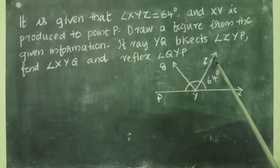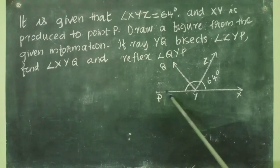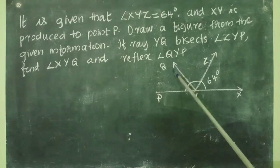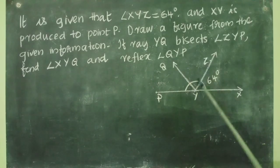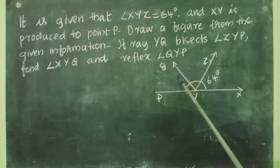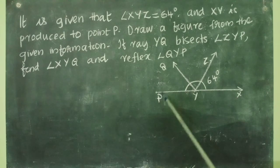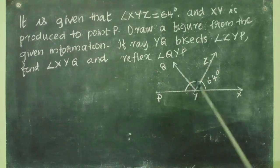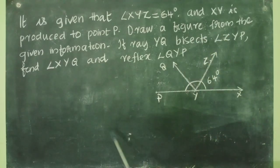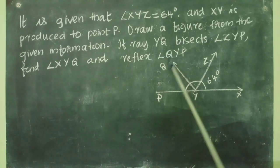So what all things have we drawn: first we drew angle XYZ, next we extended XY to the point P, then we drew YQ. This YQ is bisecting angle ZYP into two equal parts. These are the two equal angles formed. The angles are QYP and QYZ — they are equal because ray YQ is bisecting ZYP. The question is to find angle XYQ and reflex angle QYP.